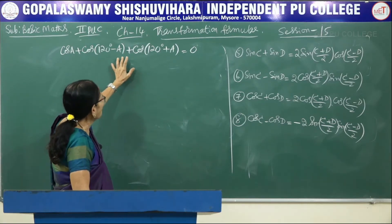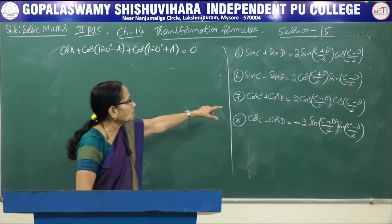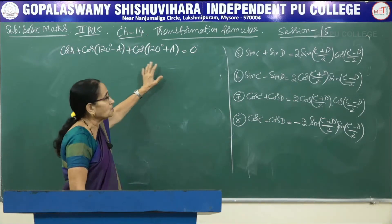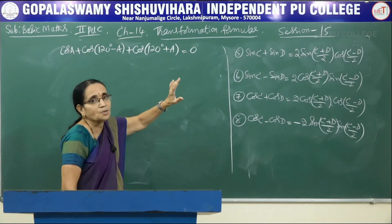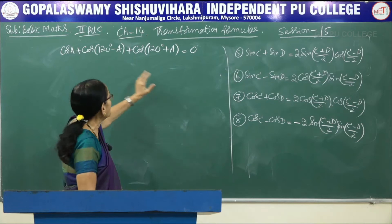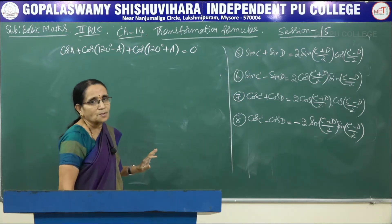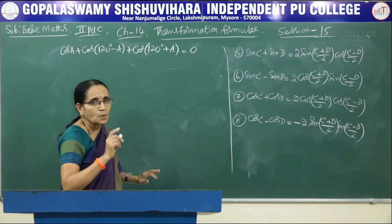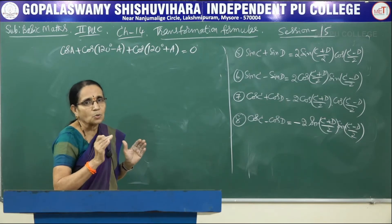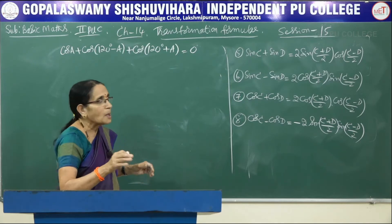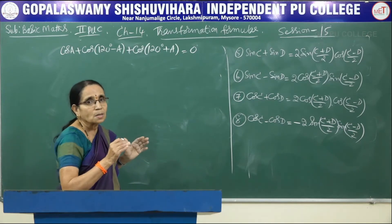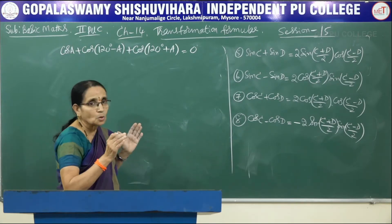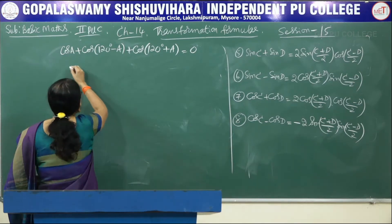Consider cos(120 - A) and cos(120 + A) — that is cos C + cos D. When you add these two, minus A and plus A cancel. When you subtract, A gets added up and 120 cancels. That is the advantage. You have to look at the terms given in the problem and decide which two to take — whichever is most beneficial.